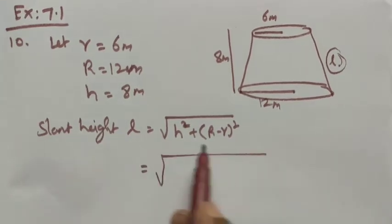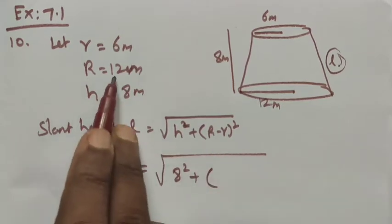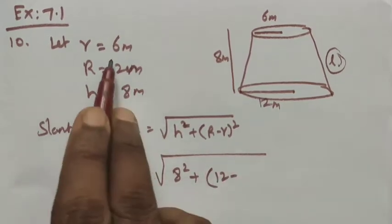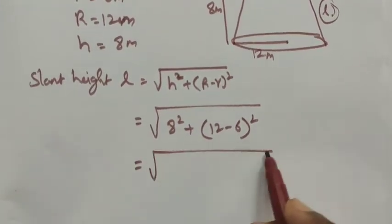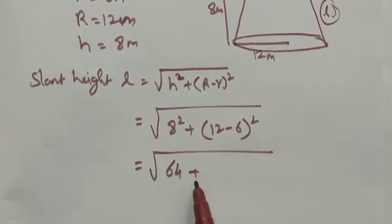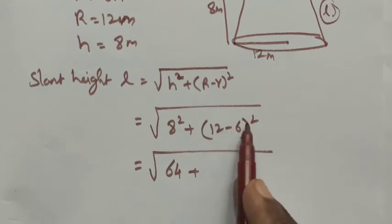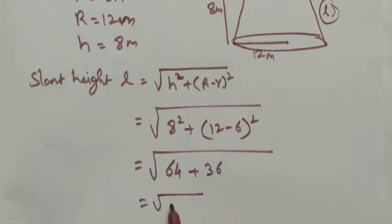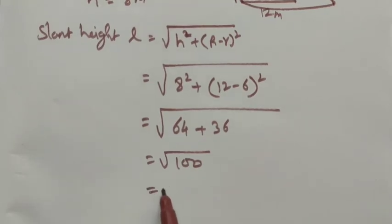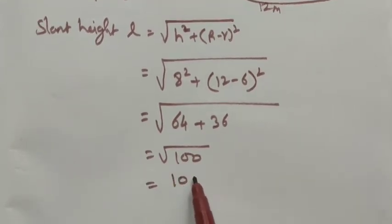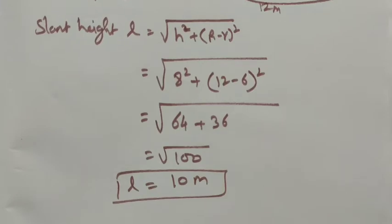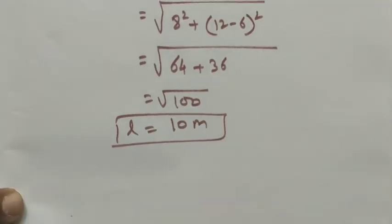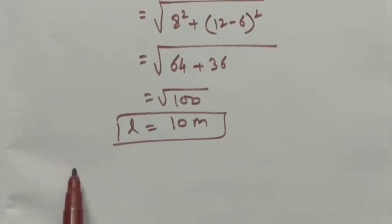Substituting the values: l = √(8² + (12 − 6)²) = √(64 + 36) = √100 = 10 cm. So the slant height l = 10 cm.